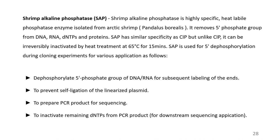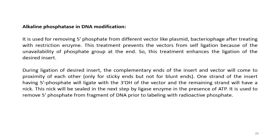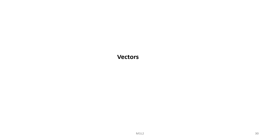SAP is used for 5' dephosphorylation during cloning experiments: it dephosphorylates 5' phosphate groups of DNA and RNA for subsequent labeling, prevents self-ligation of linearized plasmid, and prepares PCR products for sequencing by inactivating remaining dNTPs from PCR products. Alkaline phosphatase is used for removing the 5' phosphate from different vectors like plasmids and bacteriophages after treating with restriction enzymes, preventing self-ligation. During ligation of the desired insert, one strand of the insert having a 5' phosphate will ligate with the 3' OH of the vector, and the remaining nick will be sealed by ligase enzyme in the presence of ATP.